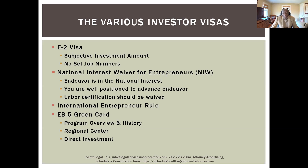The next investor visa we do a lot of is the national interest waiver, which is also a green card like the EB-5. This is based on an entrepreneur coming to the United States to engage in an endeavor that is in the national interest — such as a benefit to the economy or a valuable product or service. The individual must also be well-positioned to advance that endeavor, and the totality of the case must rise to the level where the labor certification should be waived.